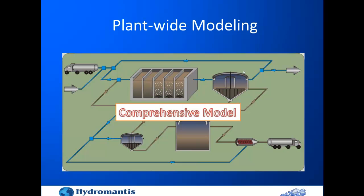There are models for the liquid stream using the activated sludge models proposed by the IWA task group, and also models for anaerobic digester systems. When you try to combine these two models, you need an interface between them. Using that interfacing approach, you end up losing some states in the system when recycling streams. To avoid this problem, we came up with a comprehensive model applicable for both the liquid stream and the sludge stream.